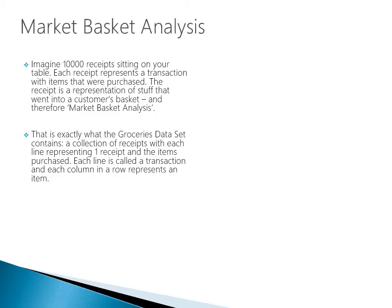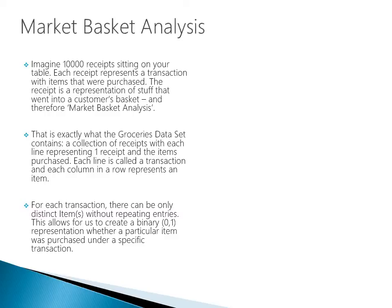The dataset contains a collection of receipts with each line representing one receipt and the items purchased. Each line is called a transaction, and each column in a row represents an item that was bought. For each transaction, there can only be distinct items without repeating entries. This allows us to create a binary 0 or 1 representation of whether a particular item was purchased under a specific transaction — we just want to know: did they or did they not purchase a given item?